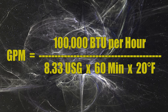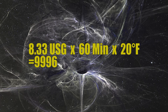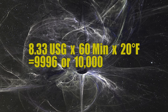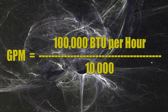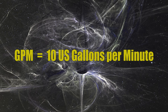The smartest way to do this math is to do all the multiplication on the bottom line first. So I have 8.33 times 60 times my delta T of 20 degrees Fahrenheit. When I plug that into my calculator I get 9,996 — which is so close to 10,000 that we just round it off to 10,000. Then I take my BTU load of 100,000 and divide it by 10,000, and I get a GPM of 10.